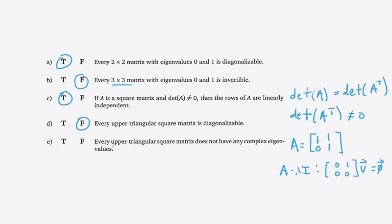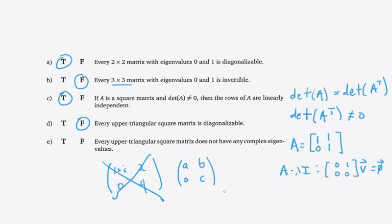Part E: true or false — every upper triangular square matrix does not have any complex eigenvalues. In this class, we only look at matrices with real entries — we'll never have a matrix with entries like 1+i. For an upper triangular matrix you can simply read off the eigenvalues along the main diagonal. Since the entries are always real in this class, you won't have any complex eigenvalues when you have an upper triangular matrix. So this is true.